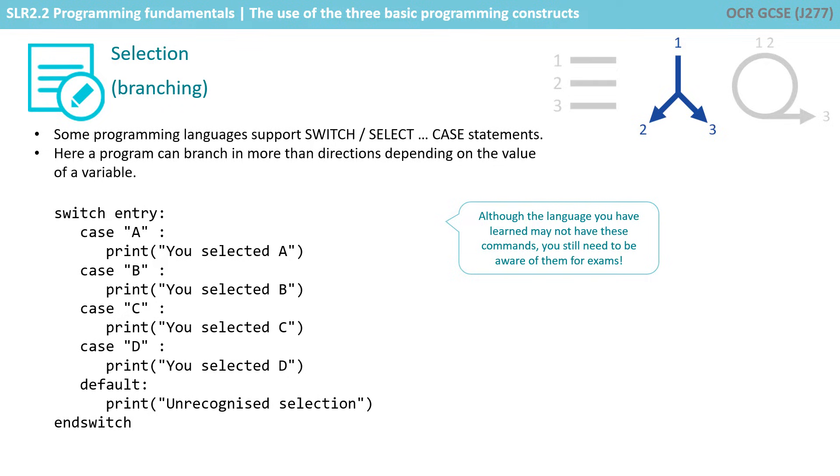We then have a situation of cases, and with each case, we would inspect the contents of the switch variable. We'd look inside entry and if entry contained a capital A, the line under that case statement would be executed. There could be a number of lines of code here.